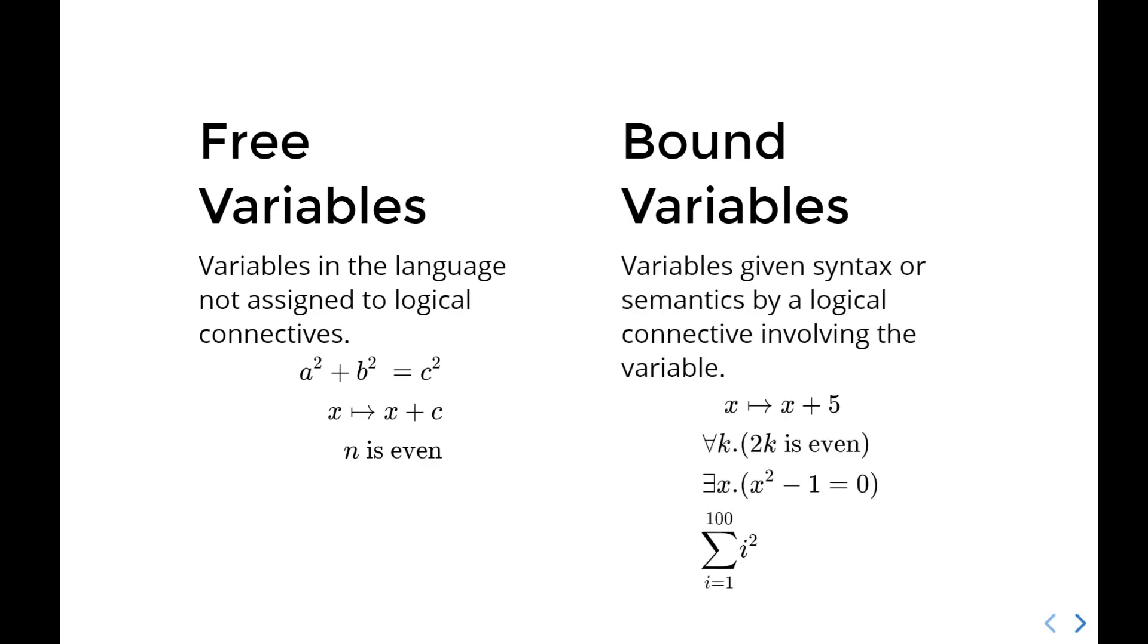When we now move to bound variables, we can see the comparison more starkly. Whenever our logic has some syntax or semantics that allows us to connect variables with formulas, we are able to decide that the variable is now bound. In the map x goes to x plus 5, we are binding the variable x to the formula x plus 5. We have explained to the reader that x will now play the role of something we substitute. Whereas in the next line, for all k, 2k is even, we're binding the variable k to the formula 2k is even, and it is either true or false at this point. There exists an x such that x squared minus 1 equals 0 is similarly binding x to the formula x squared minus 1 equals 0. In the last line, we have the variable i, which is bound by the summation symbol. Each of these binds a different meaning of what we want to do with the variable.